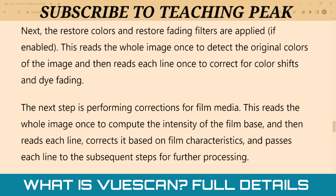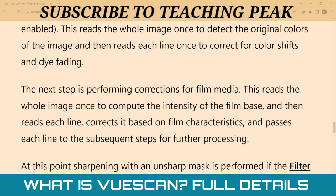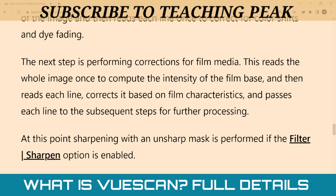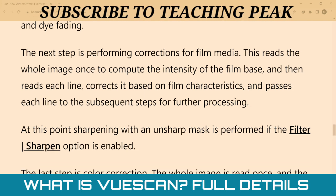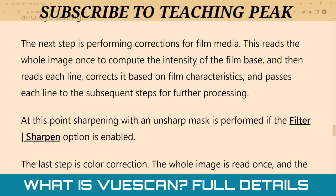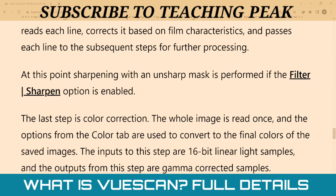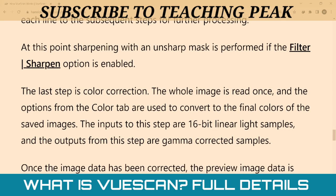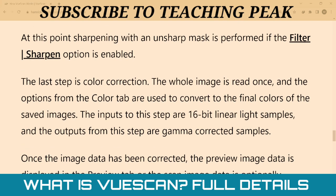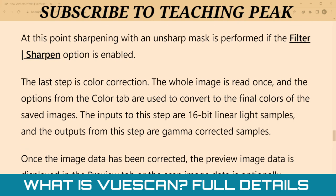The next step is performing corrections for film and media. This reads the whole image once to compute the intensity of the film base, then reads each line to correct it based on film characteristics and passes each line to subsequent steps for further processing. At this point, sharpening with the unsharp mask is performed if the filter sharpen option is enabled.